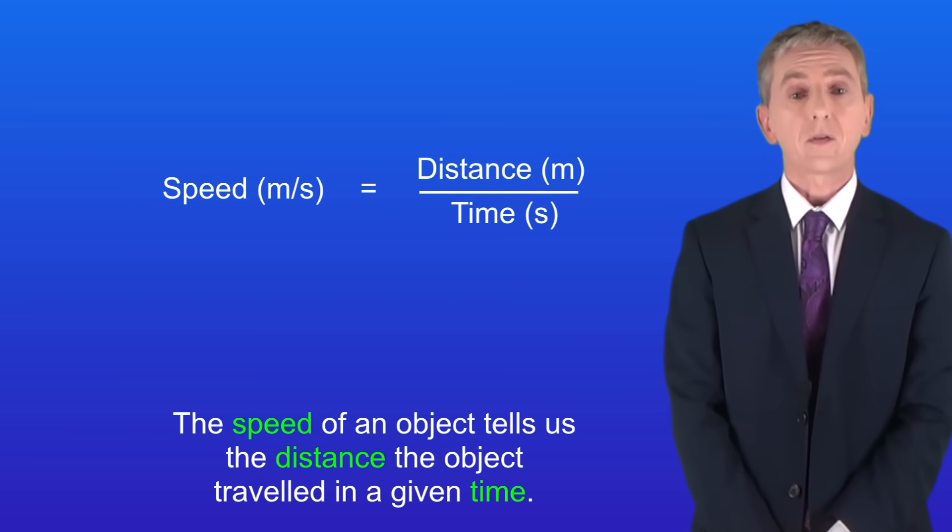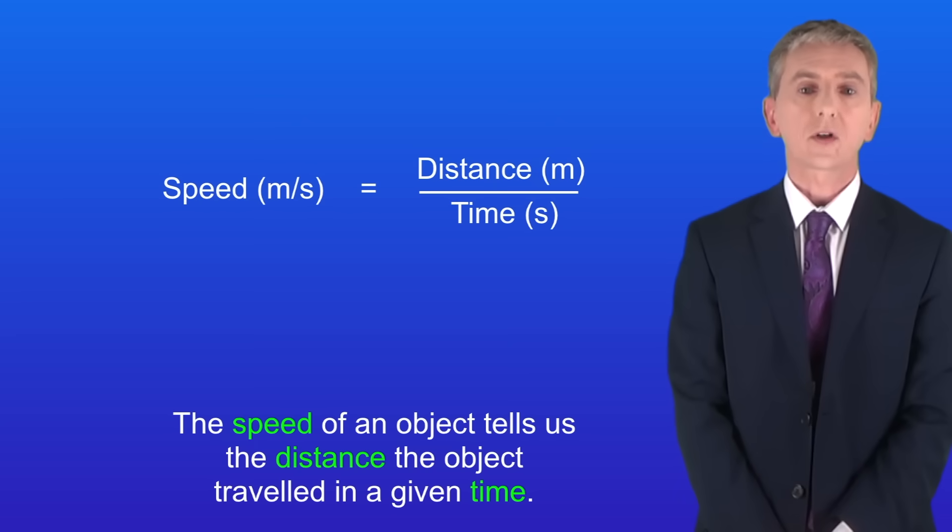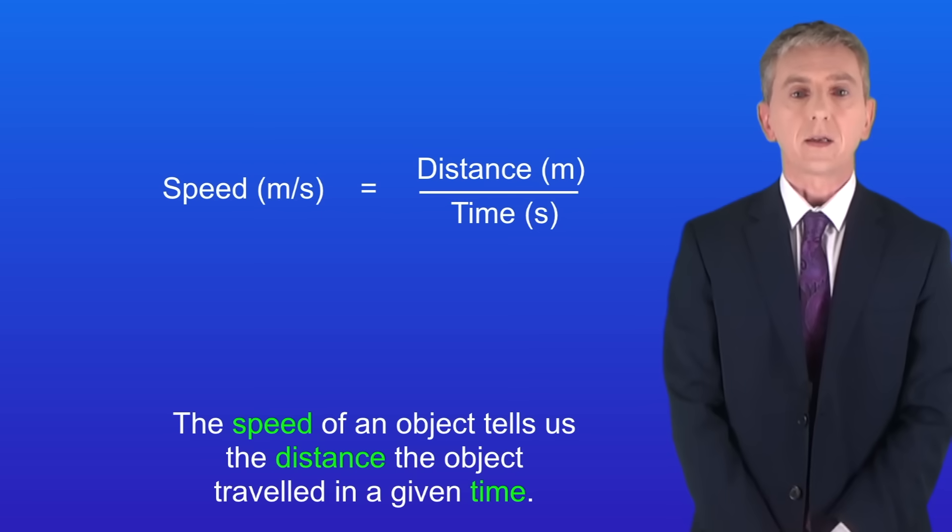In the last video we saw that the speed of an object tells us the distance the object travelled in a given time. We calculate speed using this equation. The speed equals the distance travelled divided by the time taken.